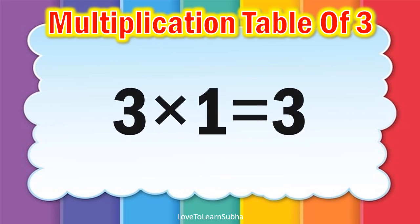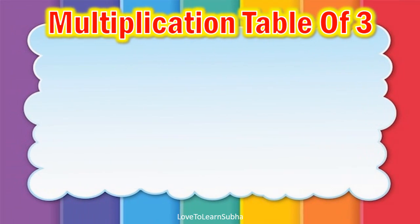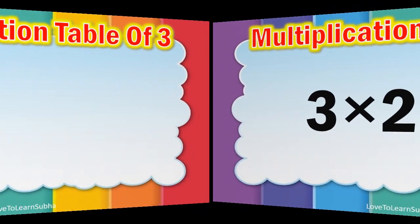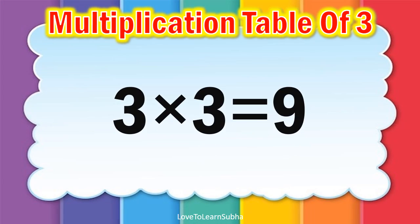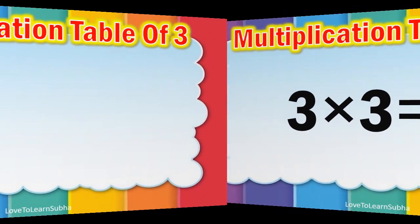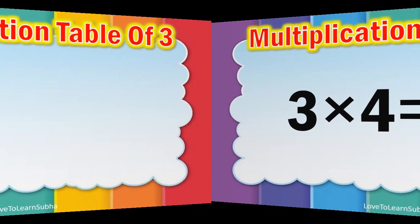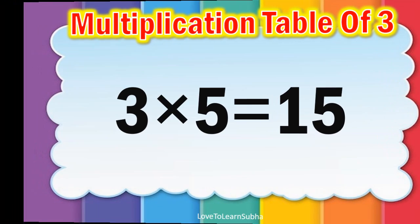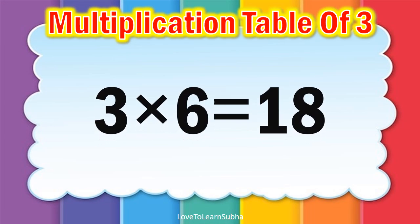3 1s are 3, 3 2s are 6, 3 3s are 9, 3 4s are 12, 3 5s are 15, 3 6s are 18,